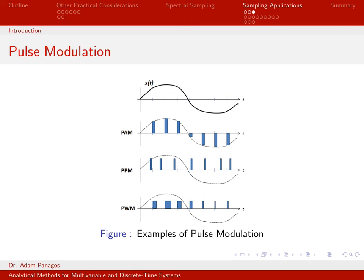That concludes our introductory discussion of different types of pulse modulation: PAM, PPM, and PWM. In the next video, we'll start discussing pulse code modulation.